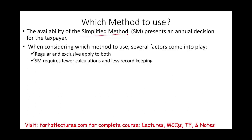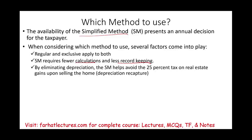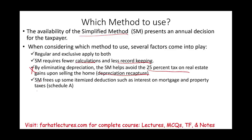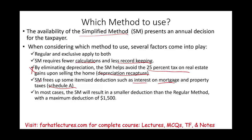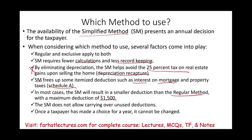The simplified method requires fewer calculations and less record keeping — you only need to know your square footage. By eliminating depreciation, you also avoid the 25% real estate recapture tax when you sell the home. The simplified method will free up your interest and mortgage for Schedule A if you itemize. In most cases the regular method yields a larger deduction since the simplified method is capped at $1,500. Once a taxpayer makes a choice for a tax year, it cannot be changed by amending the return.